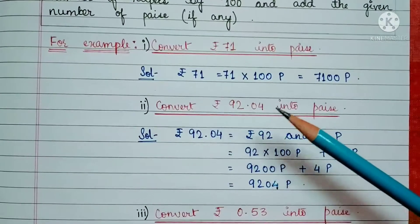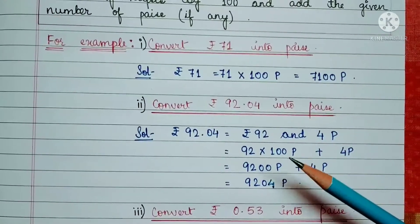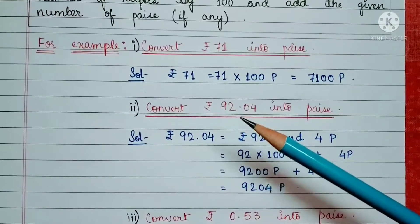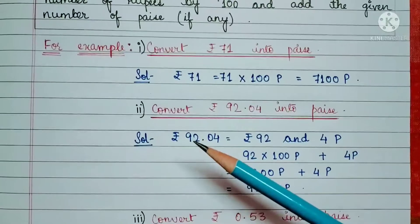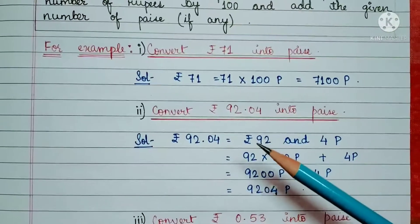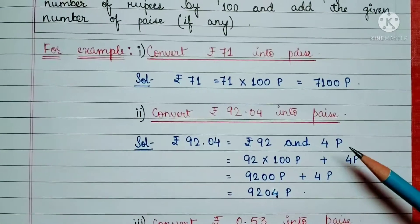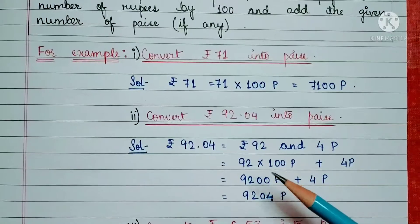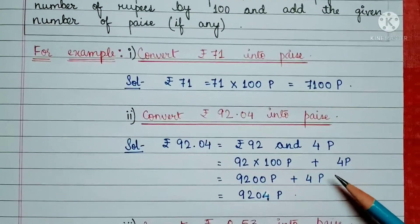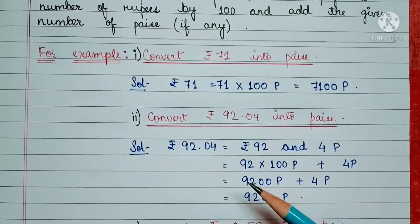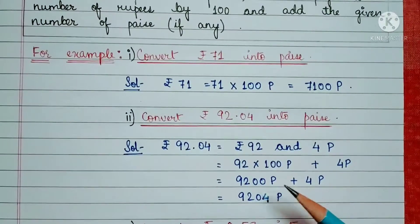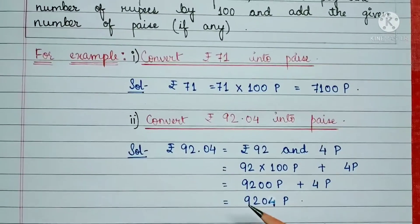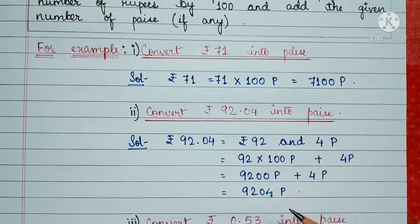Next example: convert rupees 92 and 4 paise into paise. In this case, we will only convert the rupees part and add the paise which is already there in the question. Solution — 92 rupees 4 paise. We convert rupees 92 into paise, which is equal to 92 multiplied by 100 paise, plus 4 paise. This gives us 9200 paise plus 4 paise, so 92 rupees 4 paise is equal to 9204 paise.